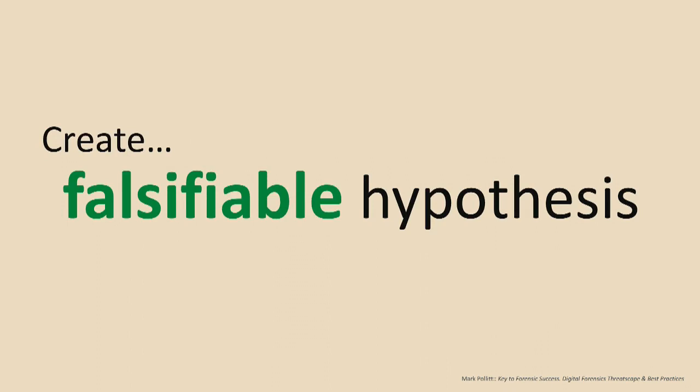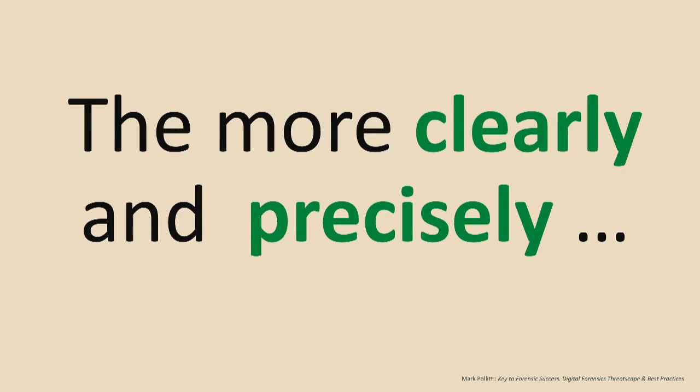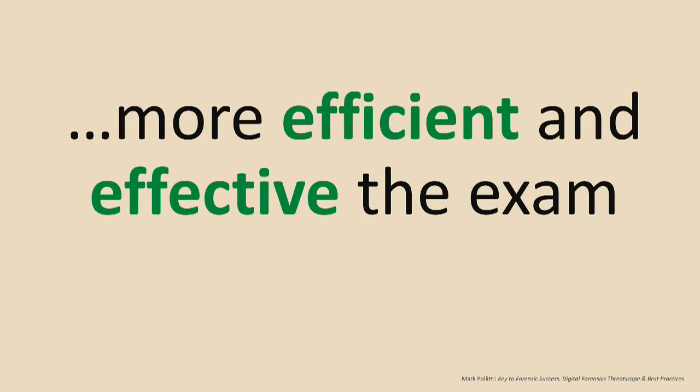You would create what's called a falsifiable hypothesis. In our example, you might hypothesize that the suspect used this computer to communicate with the victim through email. To make that falsifiable, you'd say: 'I will not find evidence that the suspect has communicated with the victim on this computer.' Then you can either prove or disprove that, or it can be indeterminate. So now you know what you're trying to find and where to look. The more clearly and precisely you can figure these out, the more efficient and effective that examination is going to be.